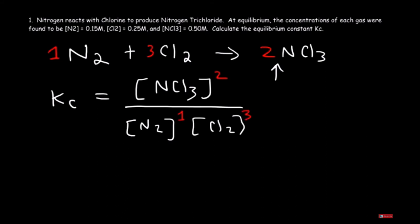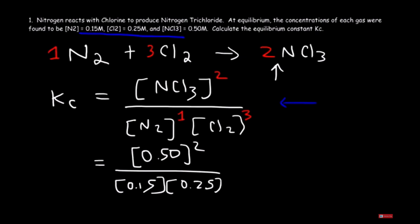Now we're given the values at equilibrium, so we can plug this into this formula and that's going to help us to calculate Kc, the equilibrium concentration constant. So the value for NCl3, that's 0.50 and so we need to square it. And then the value for N2, that's 0.15, and for Cl2, it's 0.25 but raised to the third power.